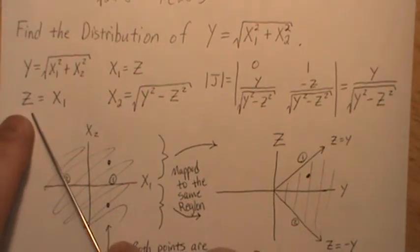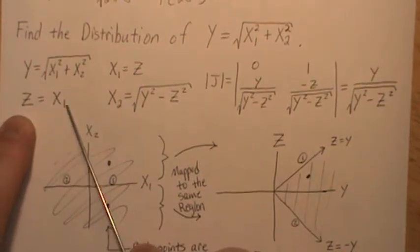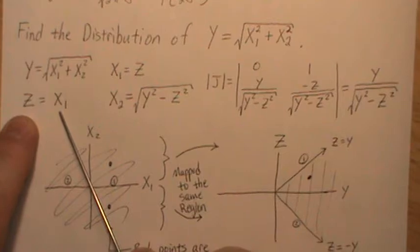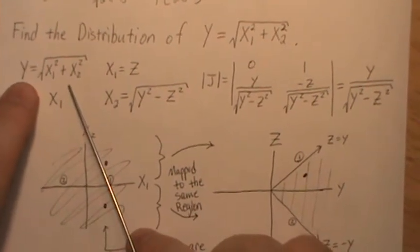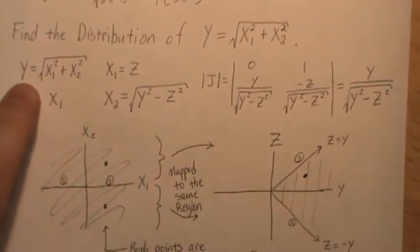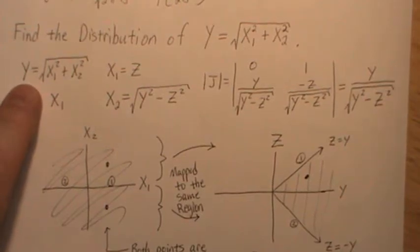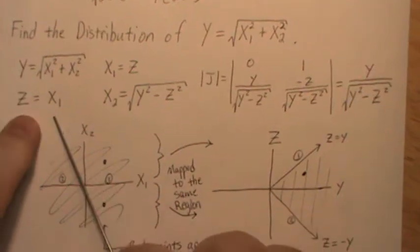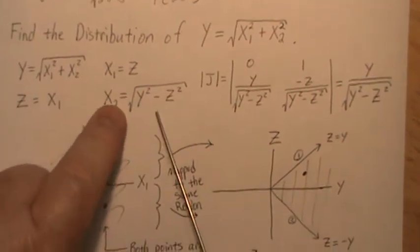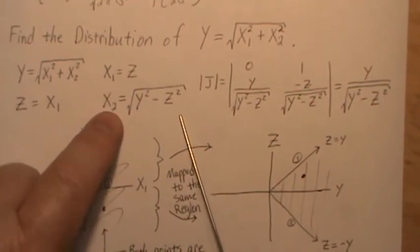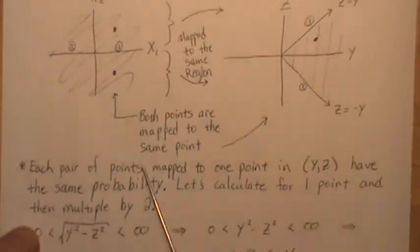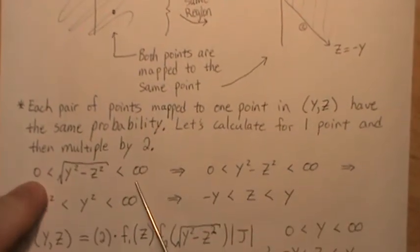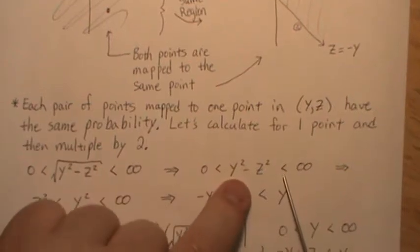So Z, we could say, goes from negative infinity to infinity. And then we find restrictions on Y. But we don't. We want to set Y and then find the restrictions on Z. So if we look at this, we know X goes from zero to infinity, which implies this.